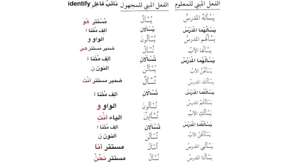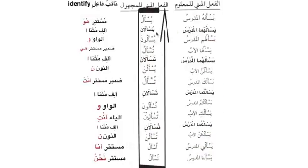Yas'aluni al-mudarrisu - I am asked - tusalu; naib fail is mustatir and it is the damir al-mutakallim 'ana'. Finally, yas'aluna al-mudarrisu - nusalu; naib fail is mustatir and it is the damir nahnu. So to summarize the conjugation of yas'alu in majhul: yus'alu, yus'alani, yus'aluna, tusalu, tusâlâni, yus'alna, tusalu, tusâlâni, tusâlâna, tusâlâna, tusâlâni, tusâlâna, tusalu, nusalu.